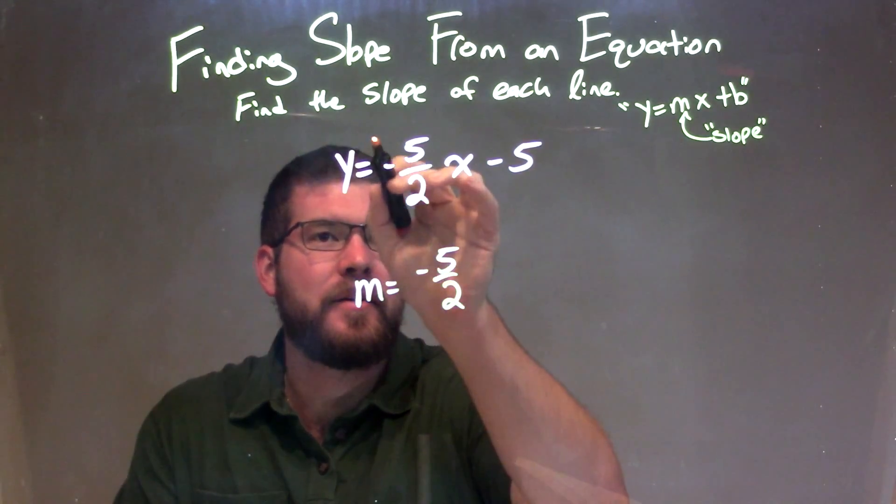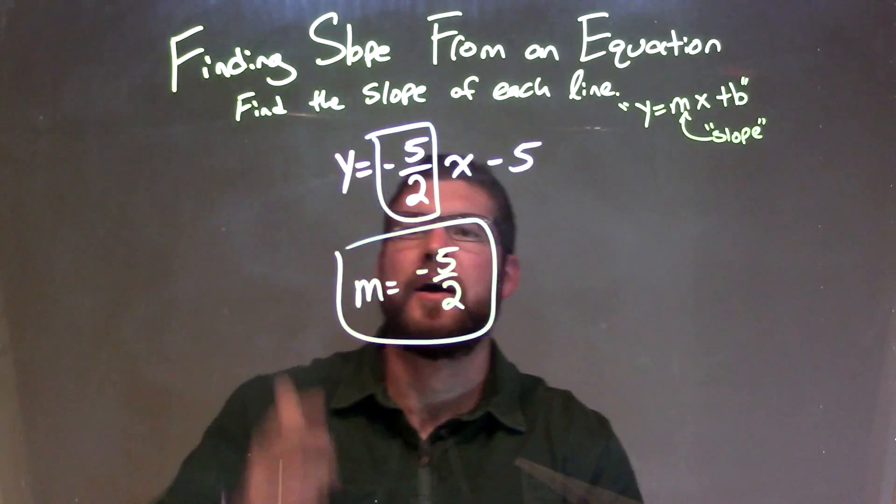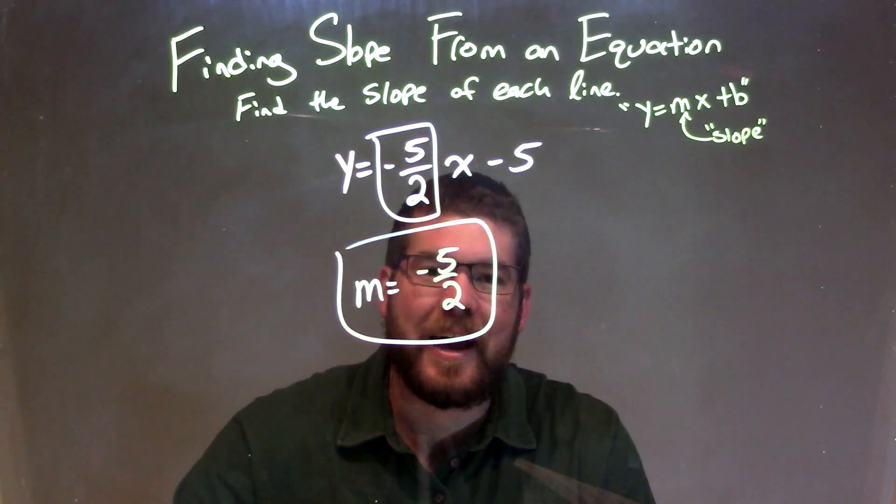That first value, that's right here, we can isolate. That is our slope, and that's the slope of our line given up here. So that's it, that's our final answer, our slope is negative 5 halves.